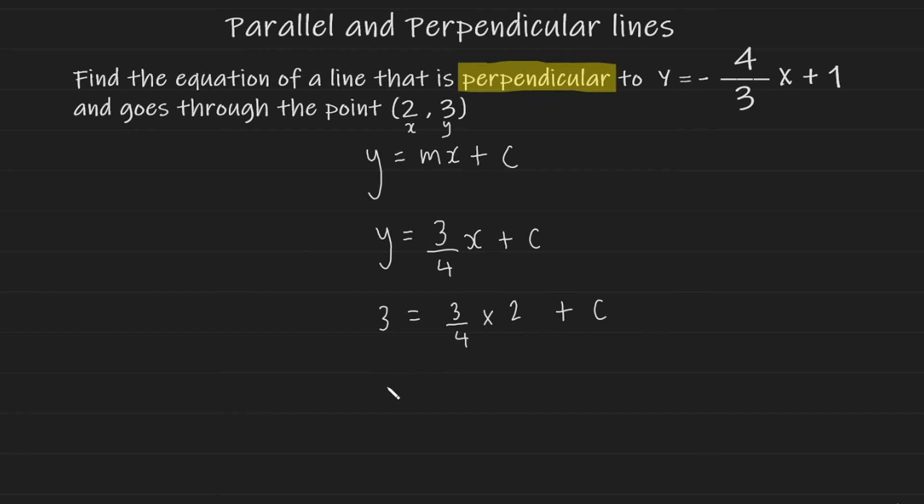And if we simplify, we end up with 3 is equal to 6 over 4 plus c. Now if we rearrange for c by subtracting 6 over 4 from both sides, we end up with the following. And this simplifies further to give us the following, 3 over 2.